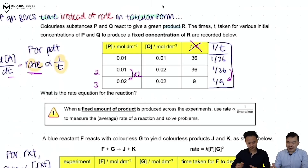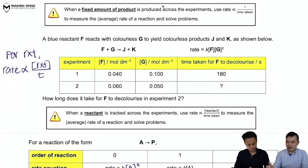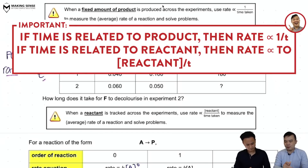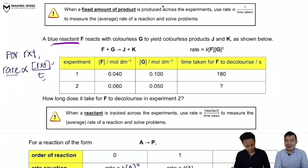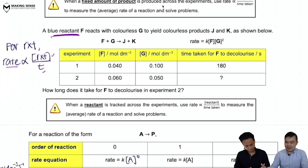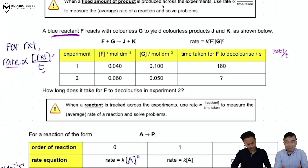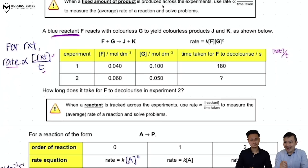However, be careful about what the time is measuring. If the time is for the product to form, use 1/t. But if the time measures how long for a reactant to disappear, then rate is inversely proportional to time AND the concentration of that reactant — so you must create a column for concentration of reactant divided by time. Once that extra column is made, you apply the inspection or mathematical method as usual. Trying to use time directly will cause you to fail the question.